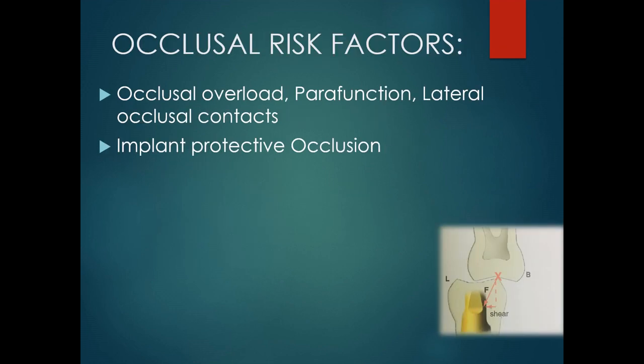Next is the occlusal risk factors: occlusal overload, parafunction, lateral occlusal contacts, etc. Among these, occlusal overload is considered one of the main causes for peri-implant bone loss and implant prosthesis failure. Due to occlusal overloading, there is crestal bone loss, increasing the anaerobic sulcus depth and resulting in peri-implant diseases.